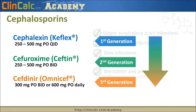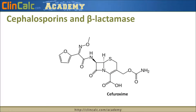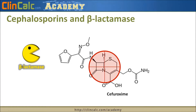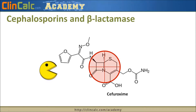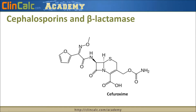Unlike penicillins, cephalosporins do not use suicide inhibitors to evade beta-lactamase. Bacteria will still produce beta-lactamase and target the bottom of the garage, but in the case of cephalosporins, the beta-lactamase is unable to open up the ring. This is because cephalosporins have increased ring stability due to the basement structure. Cephalosporins have better stability against beta-lactamase because their ring structure is more stable, whereas penicillins have to rely on other mechanisms like clavulanate to evade beta-lactamase.